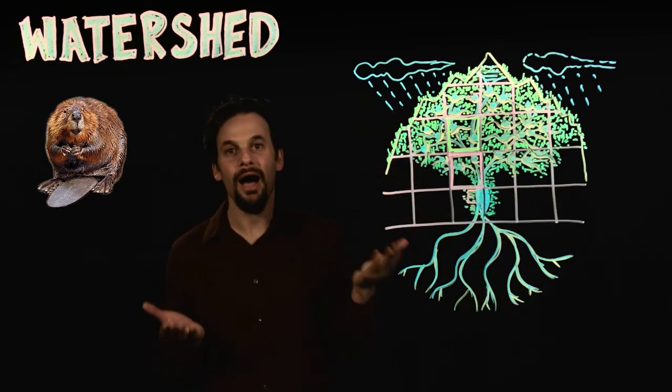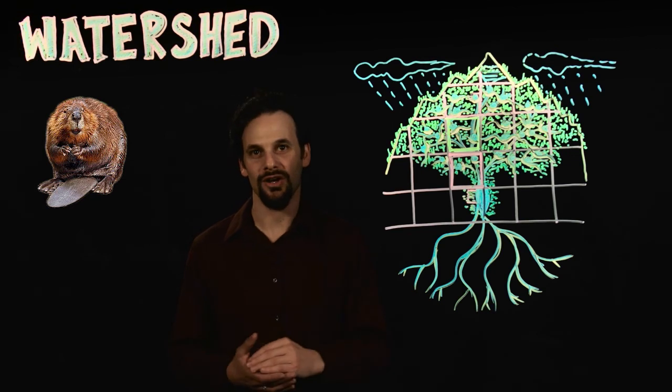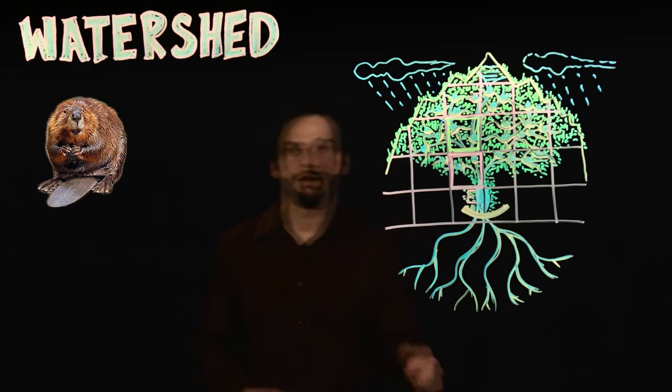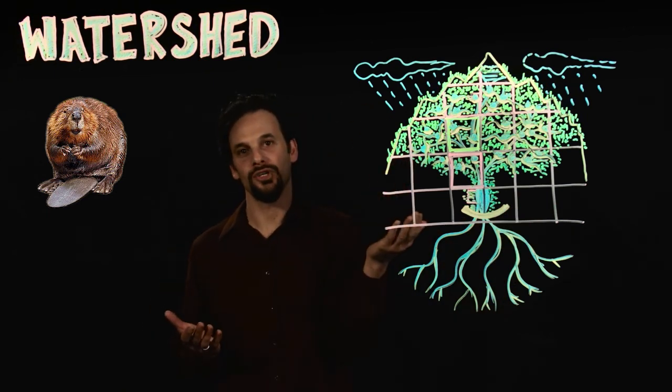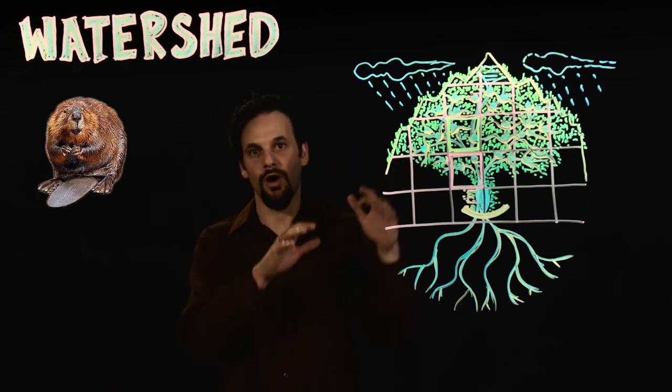If we'd begun at the bottom of the watershed we would need to build massive structures to intercept the swift and powerful flow. But when we start at the top of the watershed, smaller structures will do the job to slow, sink, and spread the water.